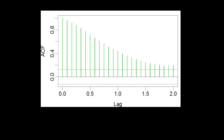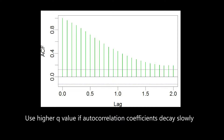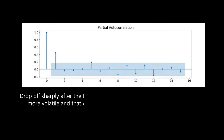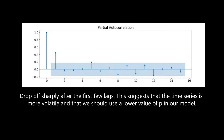How do we use these charts to determine P and Q? If we look at the ACF chart and the autocorrelation coefficients decay slowly, this suggests the time series has a high degree of persistence and we should use a higher value of Q. On the other hand, if the PACF chart shows autocorrelation coefficients that drop off sharply after the first few lags, this suggests we should use a lower value of P.